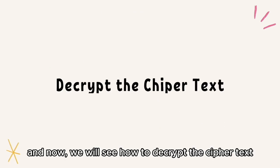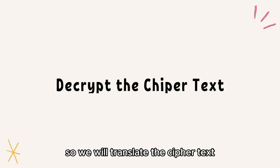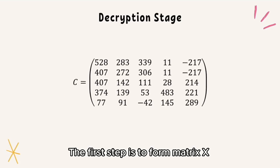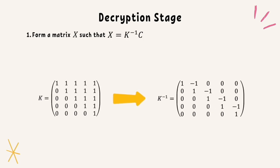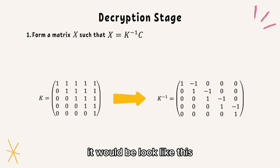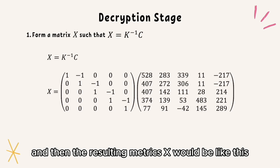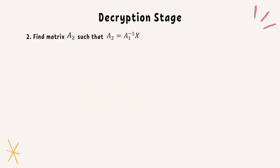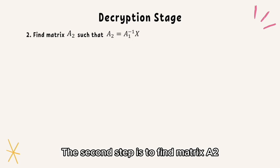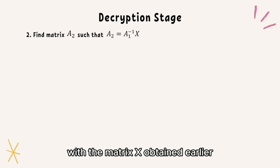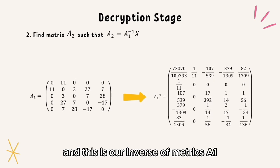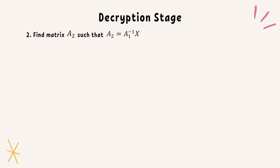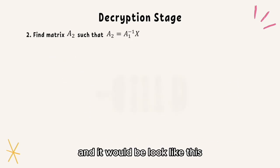Now we will see how to decrypt the cipher text we have obtained to retrieve our message. We will translate the cipher text, which is in the form of matrix C. The first step is to form matrix X by multiplying the inverse of matrix K with our cipher text, matrix C. This is our inverse of matrix K — it would look like this. And the resulting matrix X would look like this. The second step is to find matrix A2 by multiplying the inverse of matrix A1 with matrix X obtained earlier. This is our inverse of matrix A1, and we can calculate matrix A2 like this.